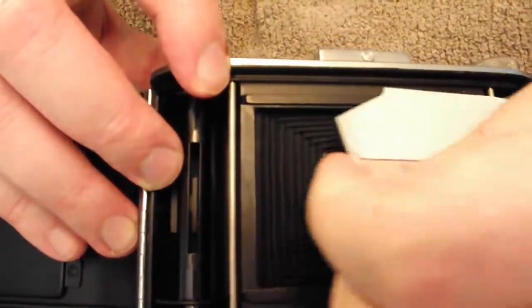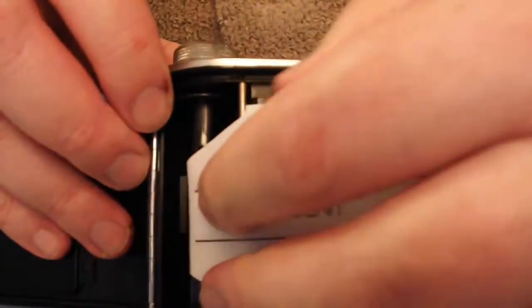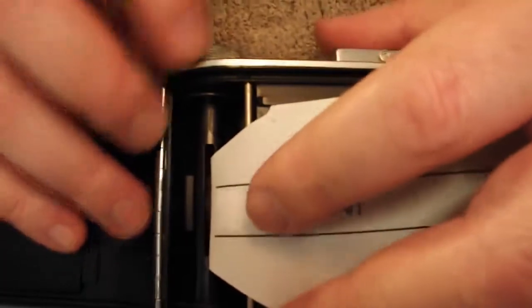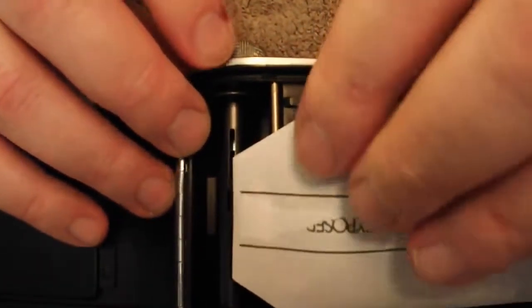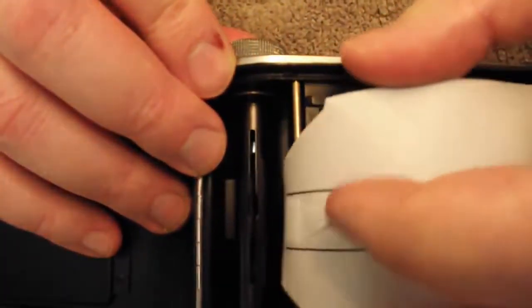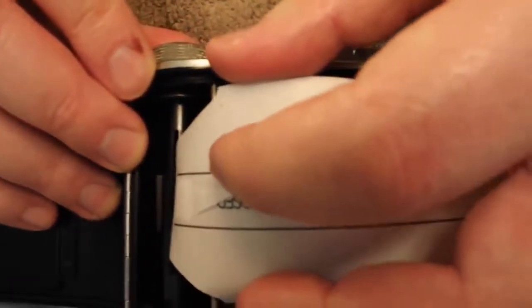So, pull the film across the focal plane. Oh no, I was wrong. Put it in the narrow slot. Which is there. So, feed that into there. Like that.